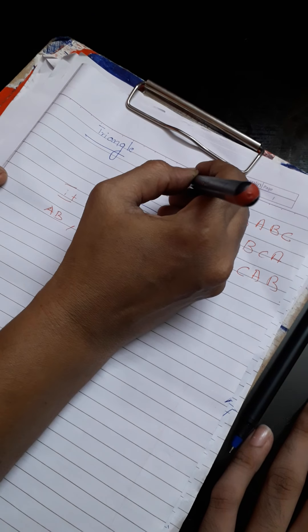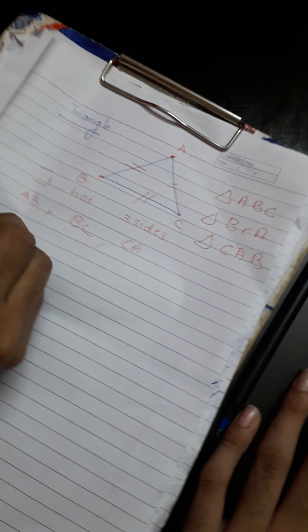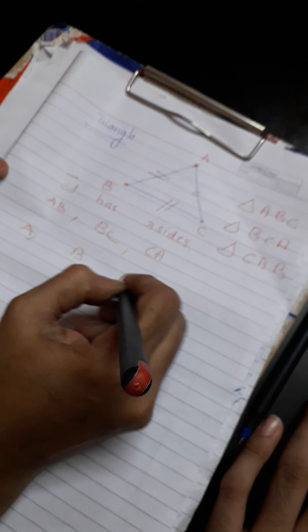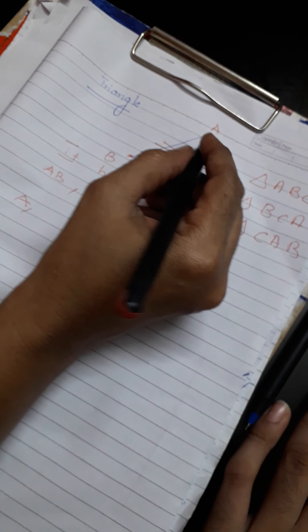Then it has three vertices. That is, A is a vertex, B is a vertex, C is a vertex. Then inside the triangle three angles are formed.